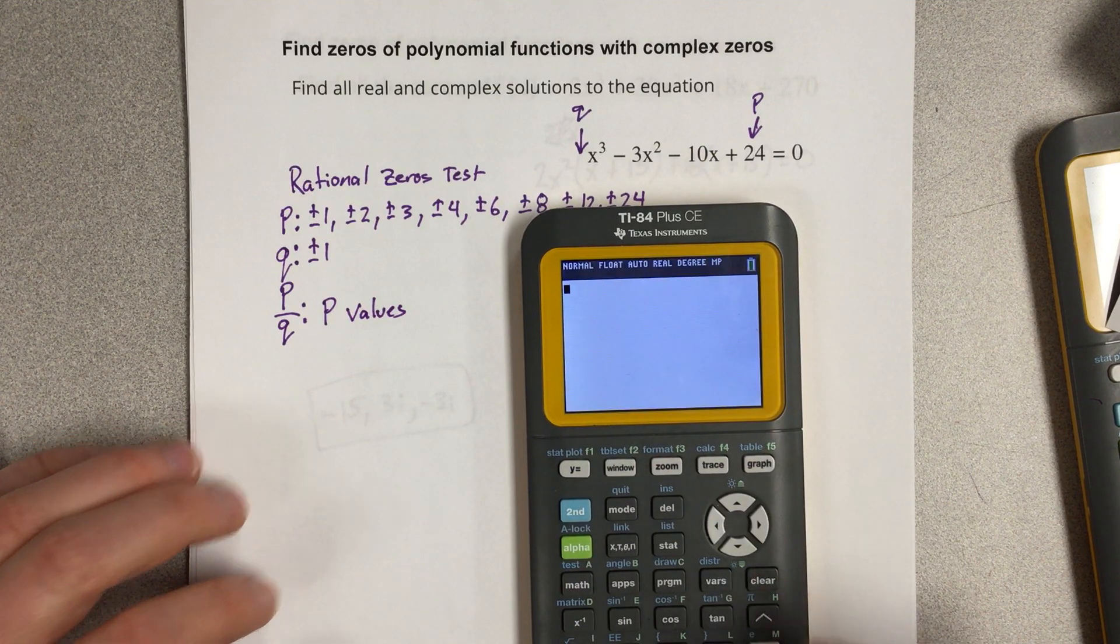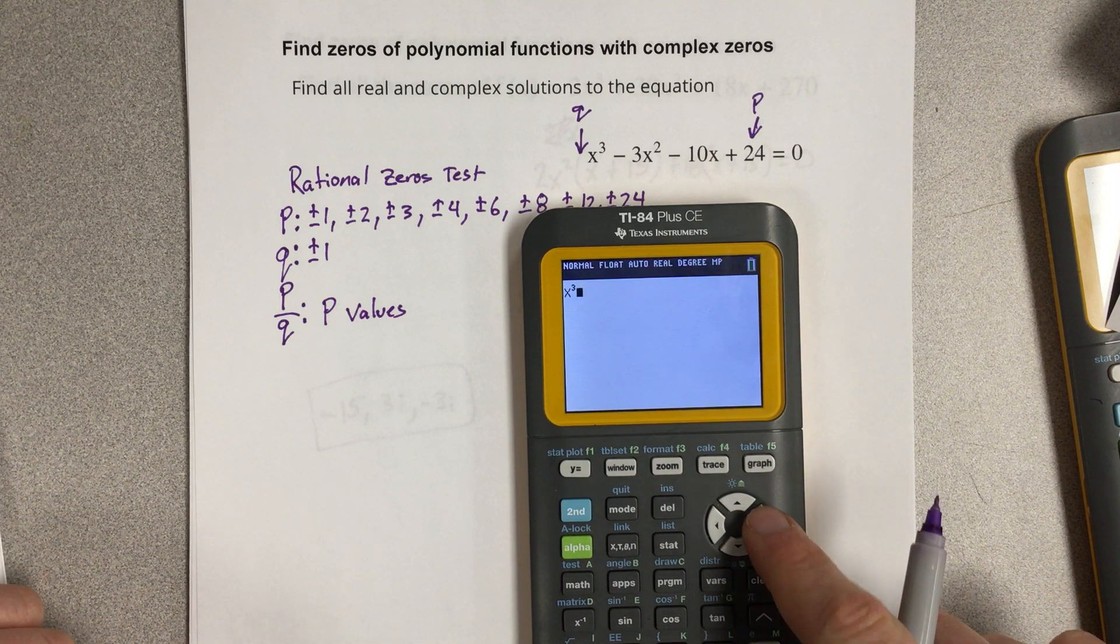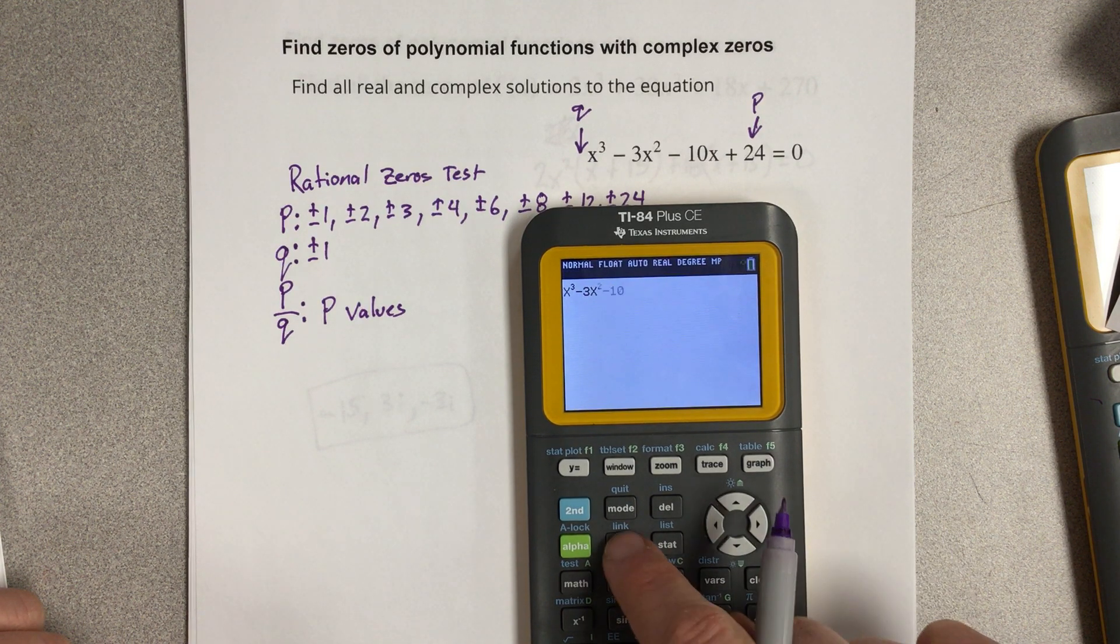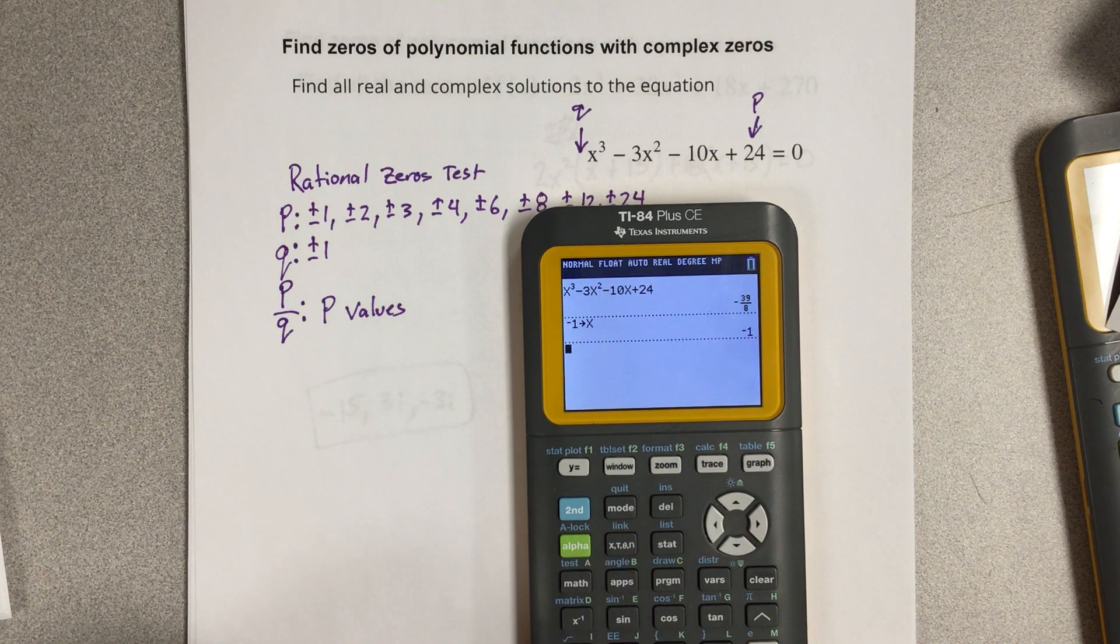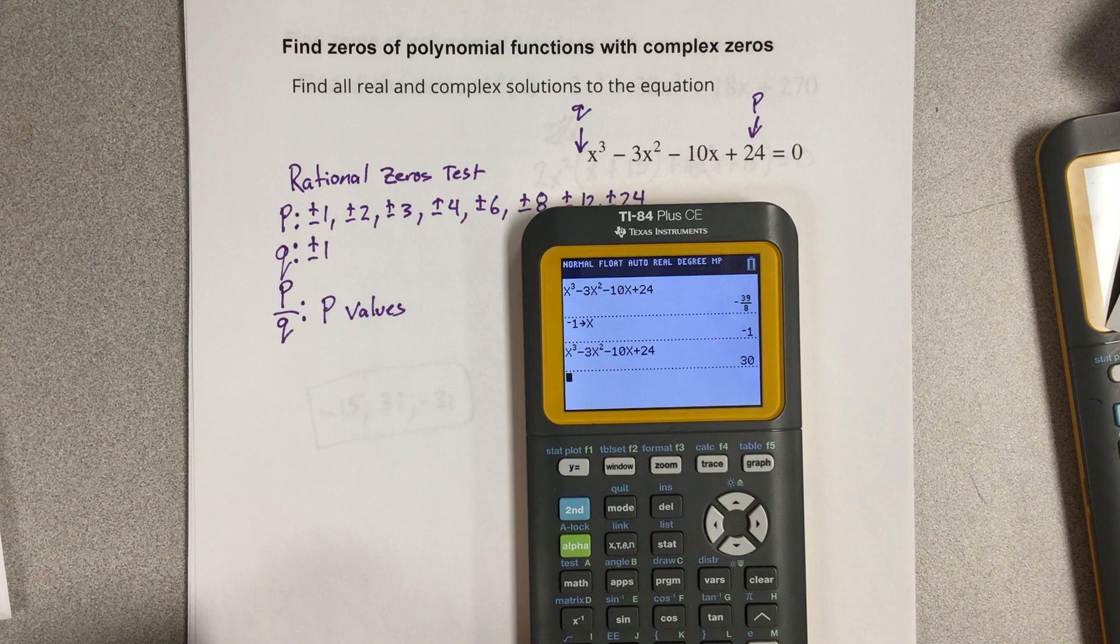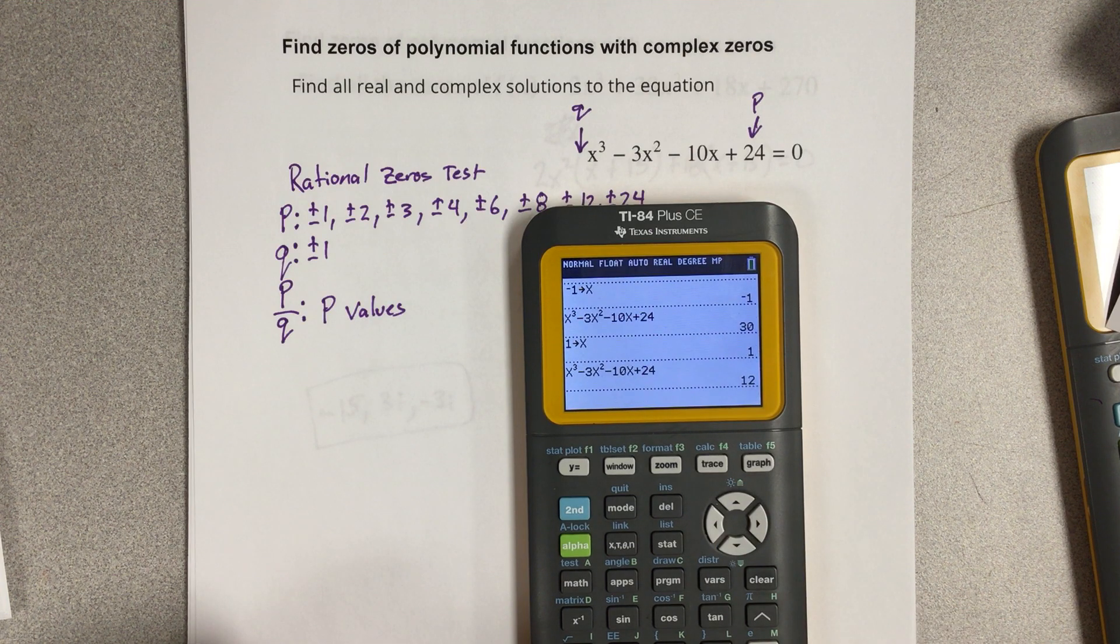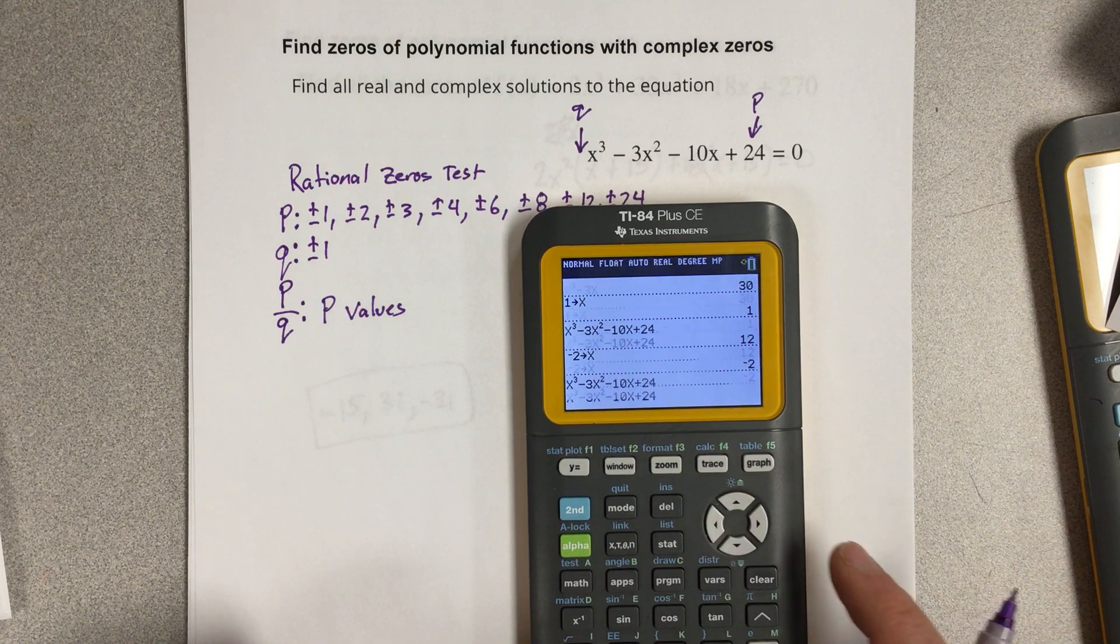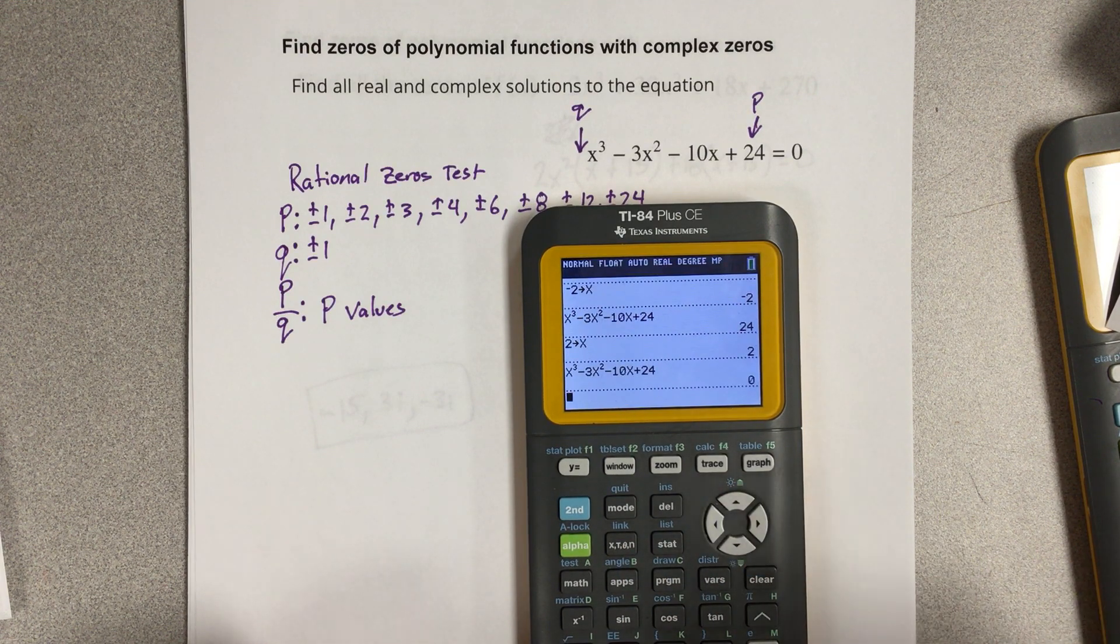I'm going to plug this equation in, so that would be x³ - 3x² - 10x + 24. I'm going to plug in -1, store it as x. Now I'm going to start checking to see if it's a zero, it's not. So 1, not a zero. -2, not a zero. 2, store it as x. And 2 is a zero.